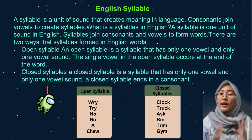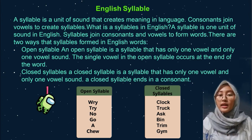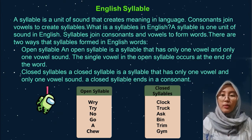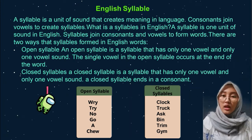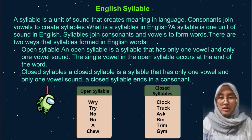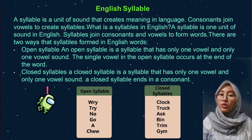Hello, my name is Amalia Latifa Anfasa, and I want to describe English syllables. A syllable is a unit of sound that creates meaning in language; consonants combine with vowels to create syllables.